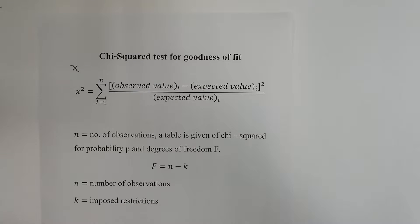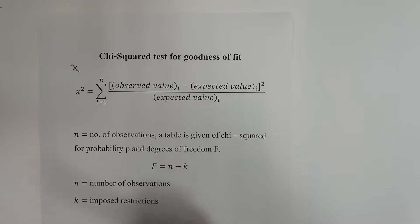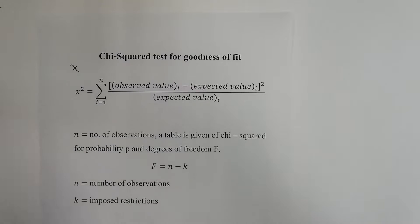The Chi-square test for goodness of fit has this equation: it's the sum of the observed value minus the expected value, all squared, divided by the expected value. The sum runs from 1 to n, where n is the number of observations. You'll be given a table of Chi-square for probability p. There are also degrees of freedom f, where f equals n minus k, and k is the imposed restrictions.